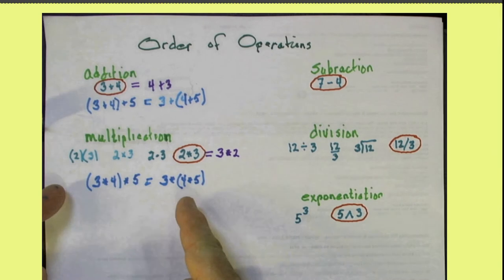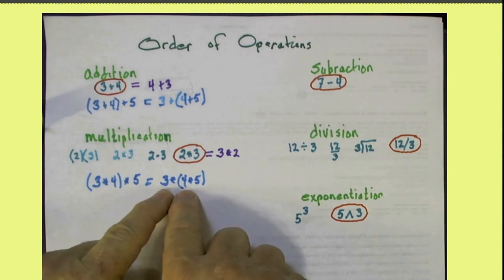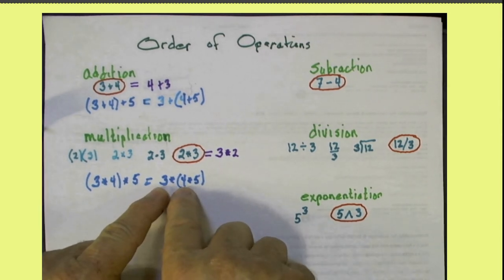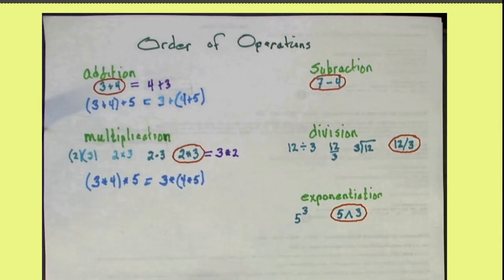As long as you're just multiplying numbers together, then 3 times 4 times 5, you could associate by doing the binary operation 3 times 4 first, that would be 12 times 5, which is 60. And 3 times 4 times 5, 4 times 5 is 20, times 3 is 60.